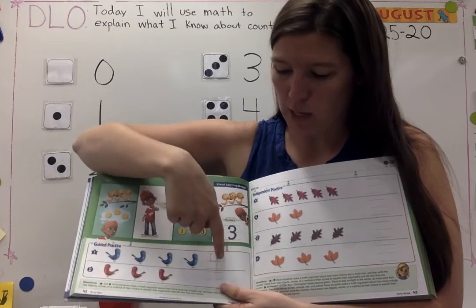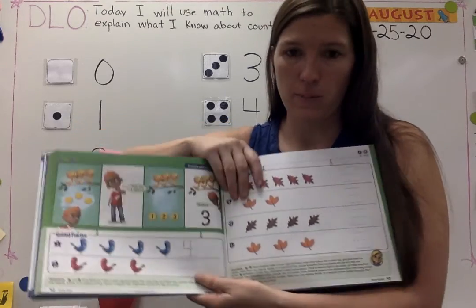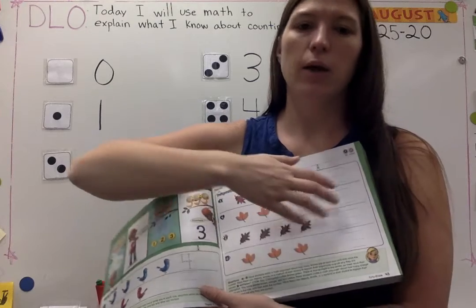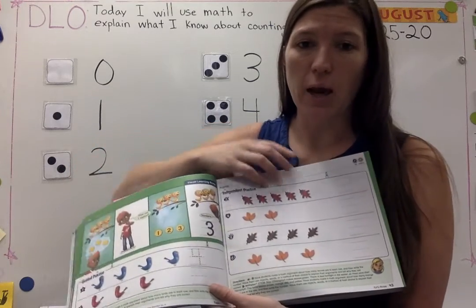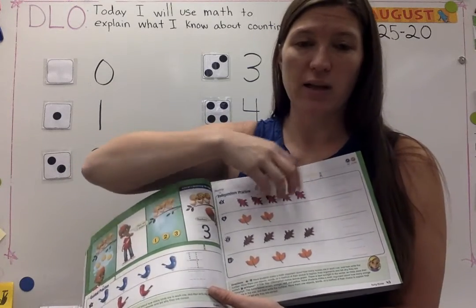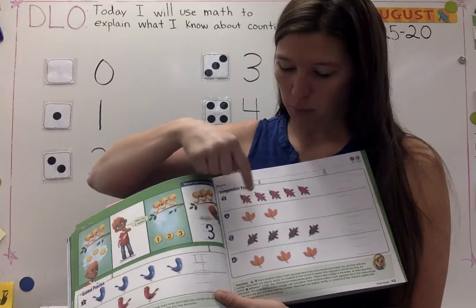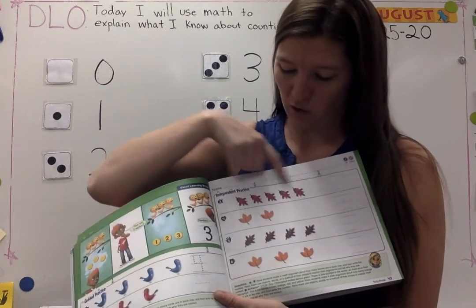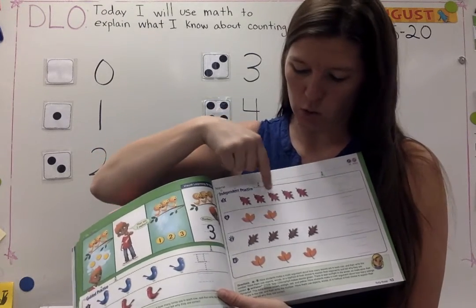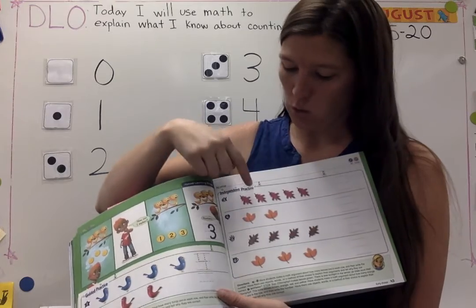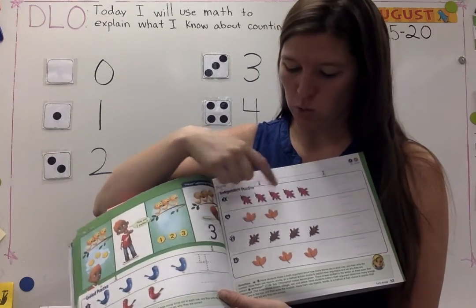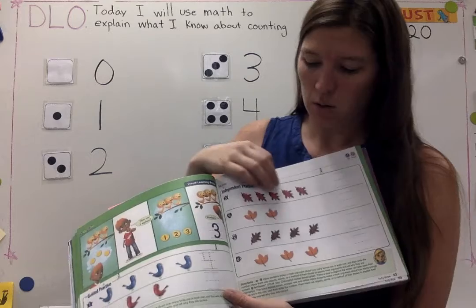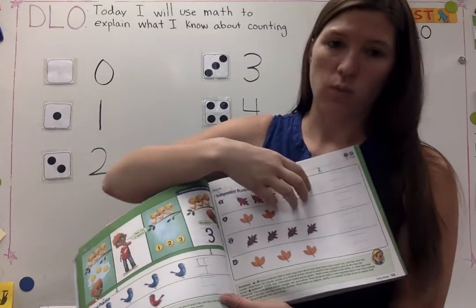Count the birds, write the number. Count the birds, write the number. Over here, you're counting leaves and writing a number, explaining how you know that that's the number. You can say: I pointed to each leaf and I counted them — that's why I know there's five here. You could mark them off — one, two, three, four, five — so you know that you didn't miss any. Then write your number.